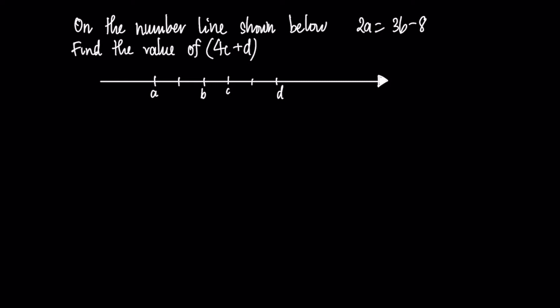On the number line shown below, we have 2a equal to 3b minus 8. Find the value of 4c plus d.